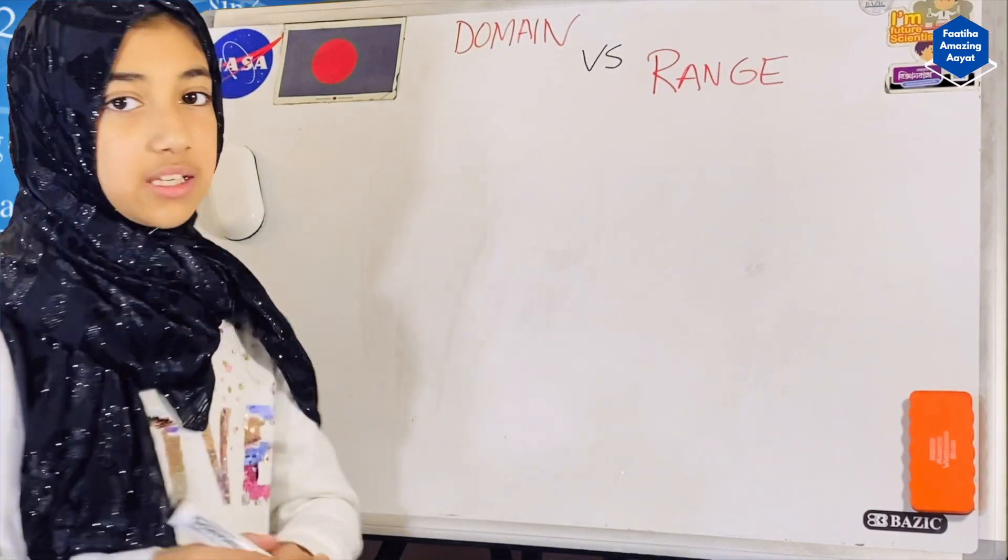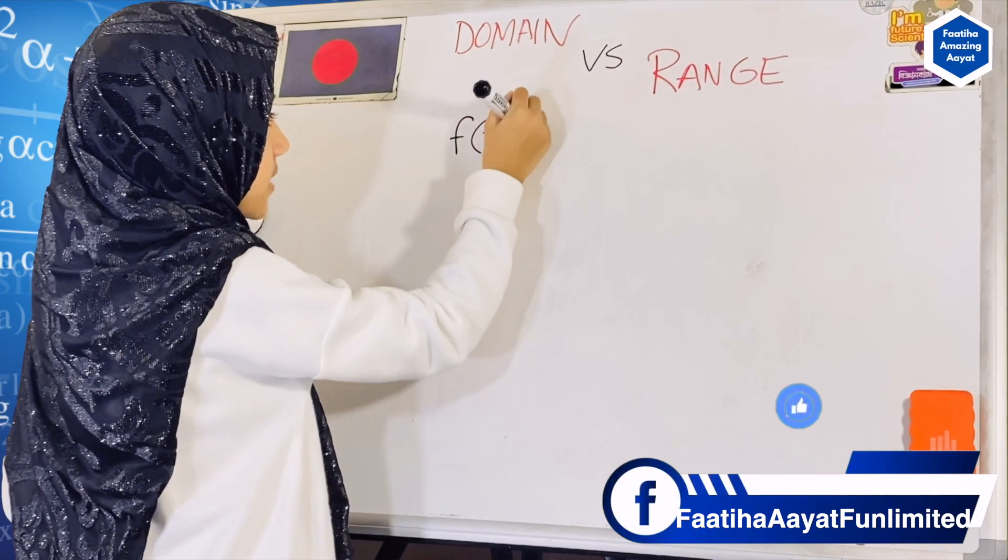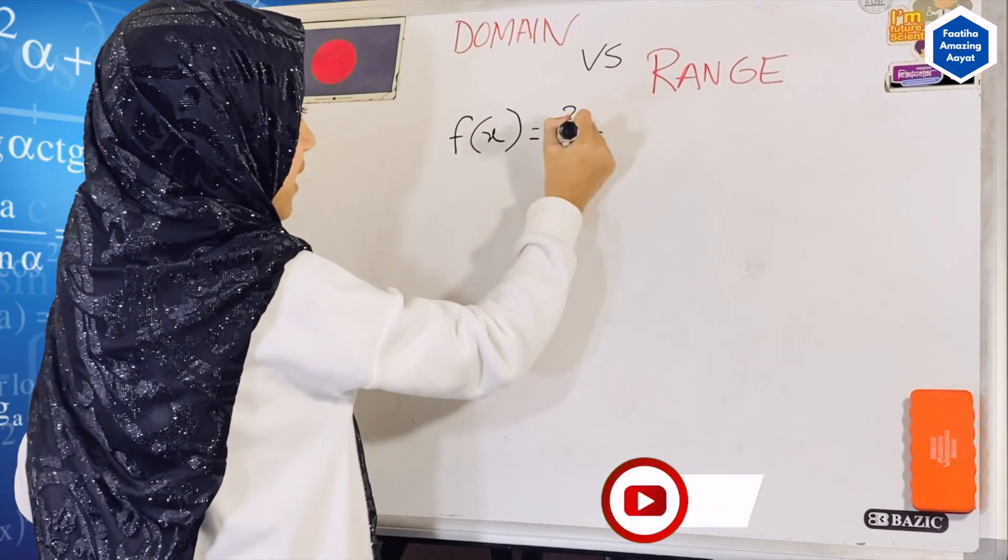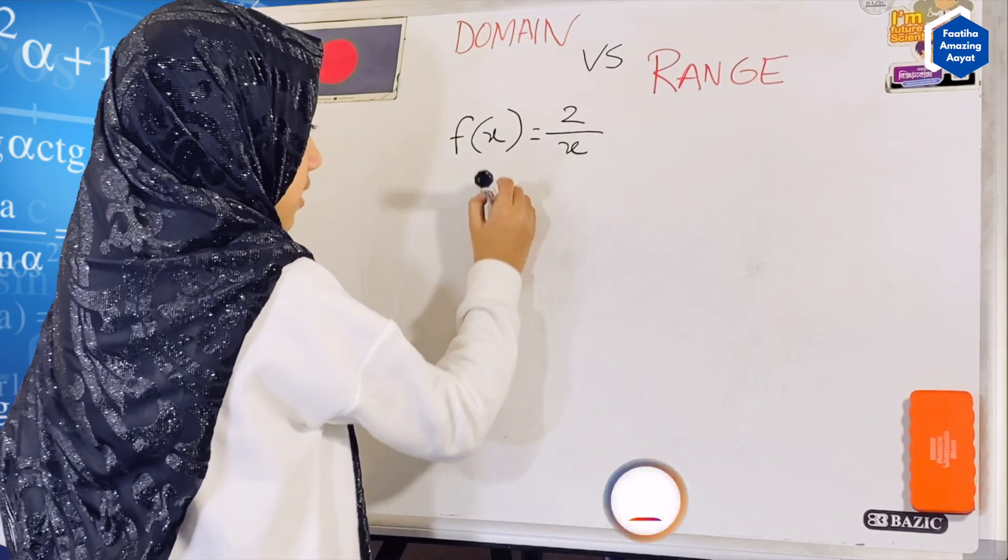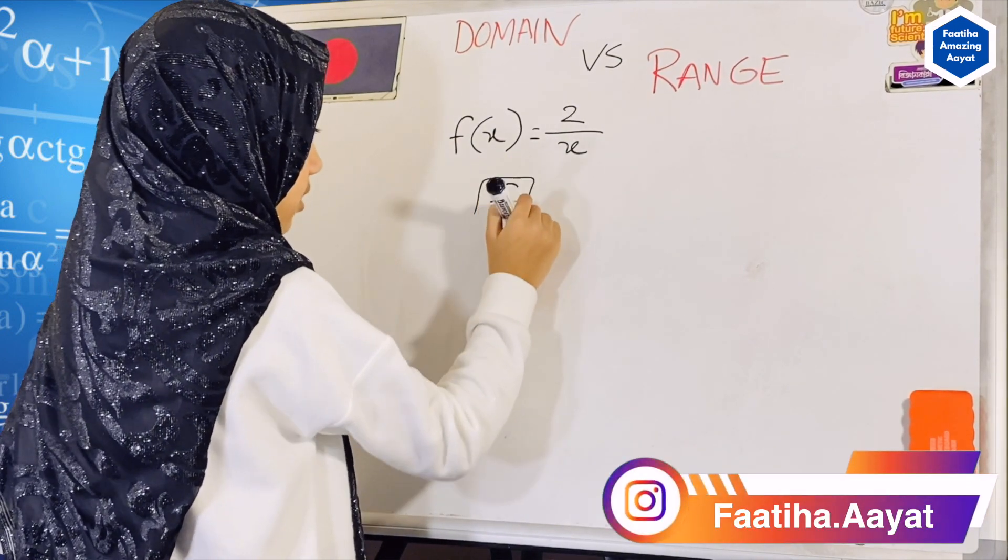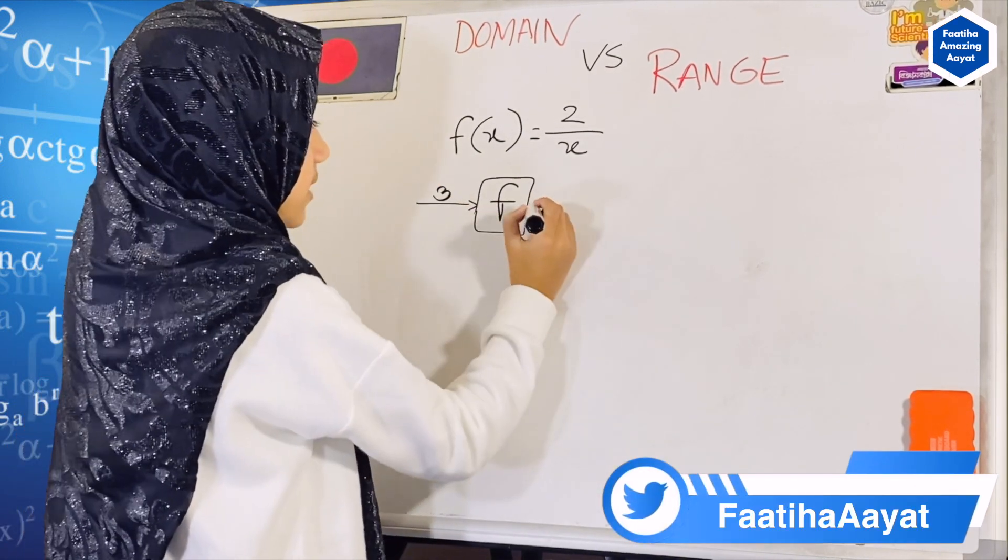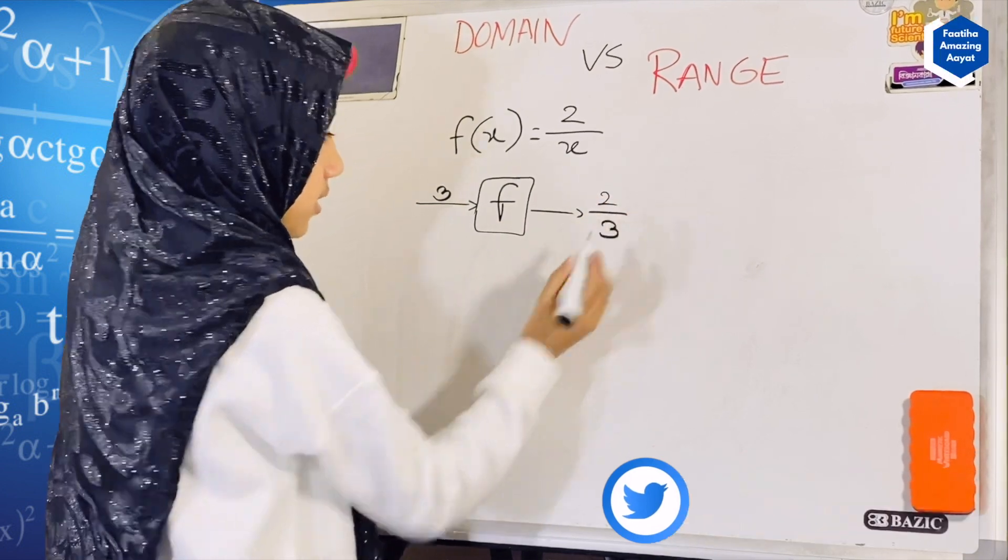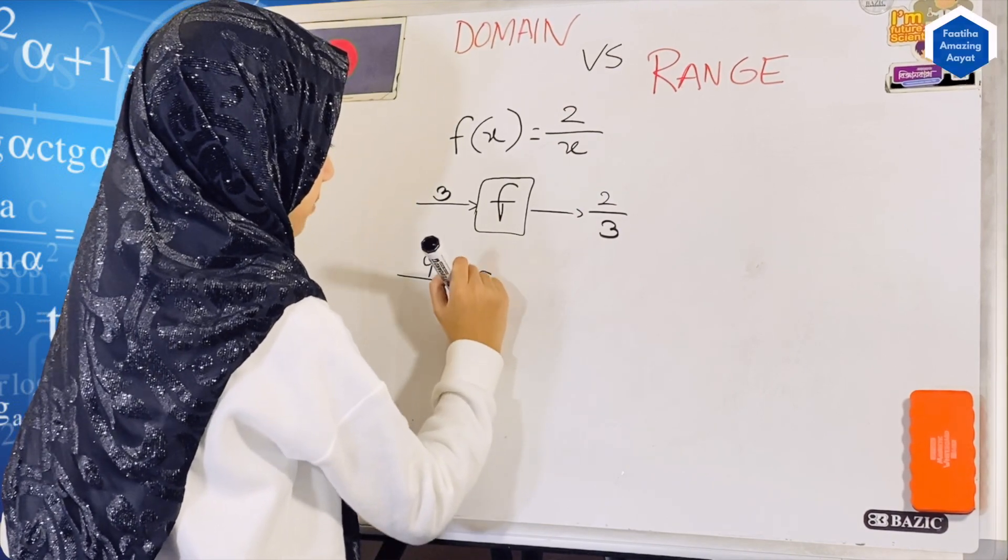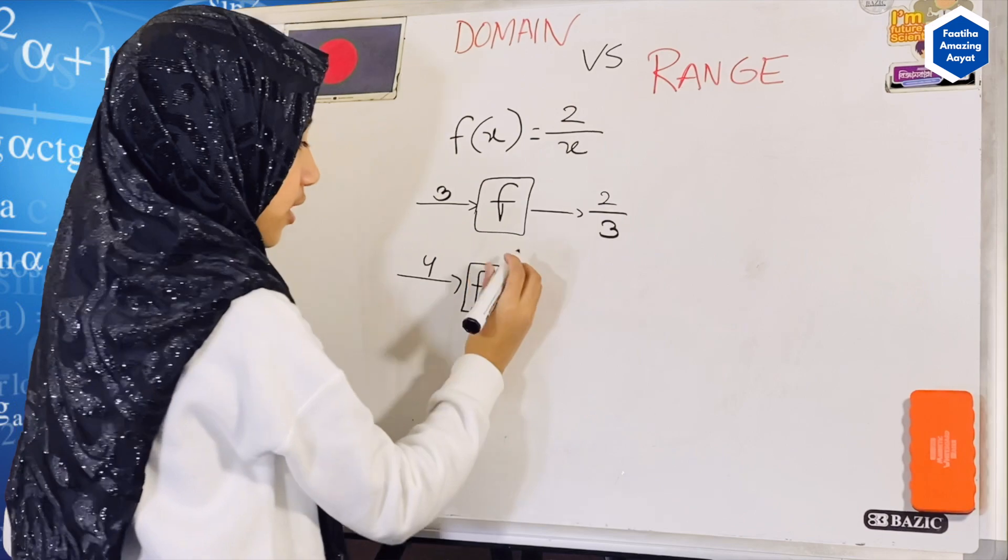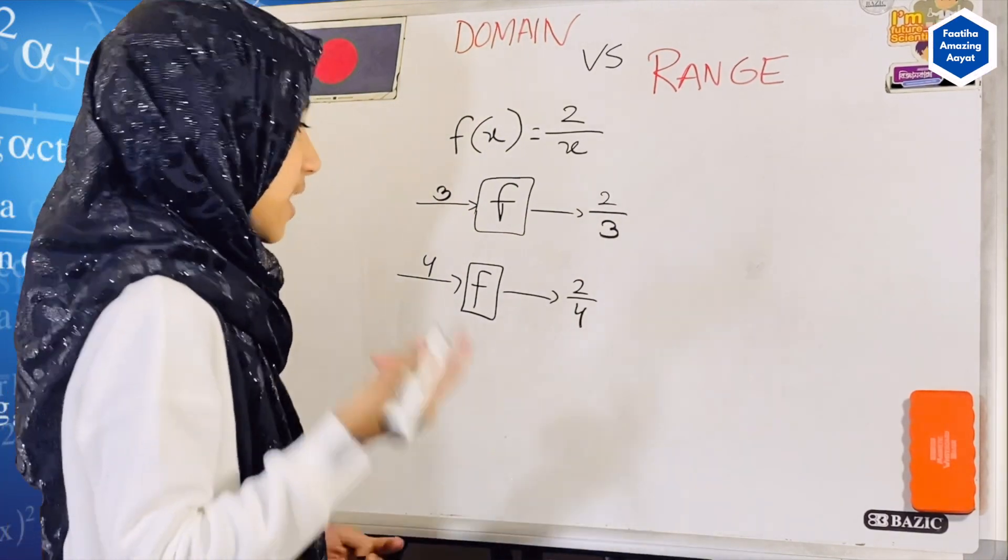Okay, so now I'll show you the domain first. Let's say in one example, we have that the function of x is equals to 2 divided by x. Now, let's try a few examples in order to find what we should do. Let's say that this is my function box. And I'm inputting something. I have to put into my x. Let's say if I put 3, then my output would be 2 over 3. That makes sense. Let me give one more input. If I put 4 into my function box, my function is 2 over x and my x is 4. So, it would come out 2 over 4, which is basically half.